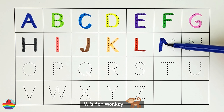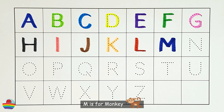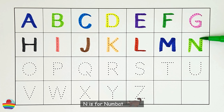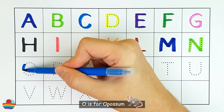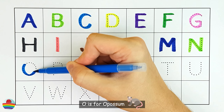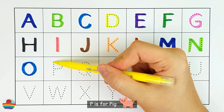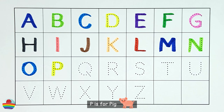M. M is for monkey. N. N is for numbat. O. O is for opossum. P. P is for pig.